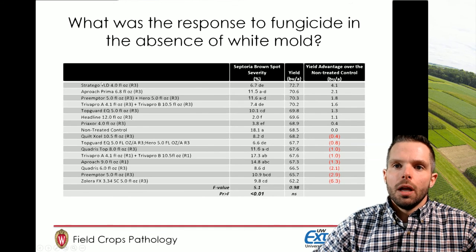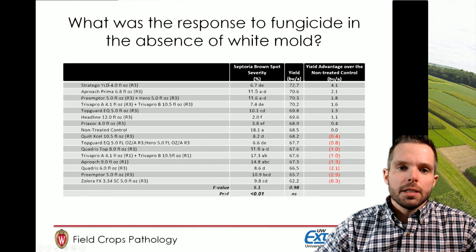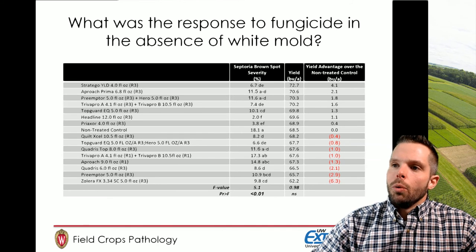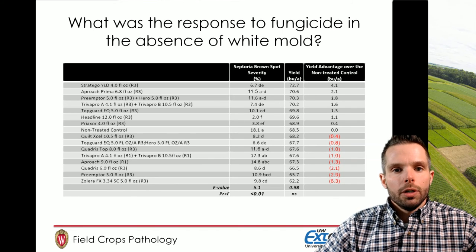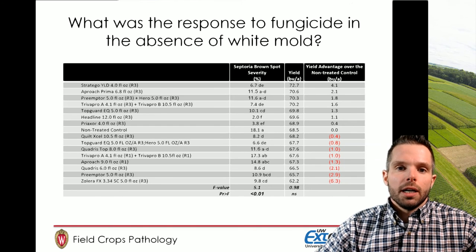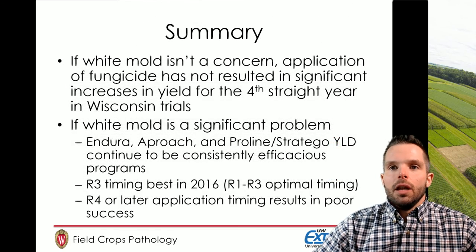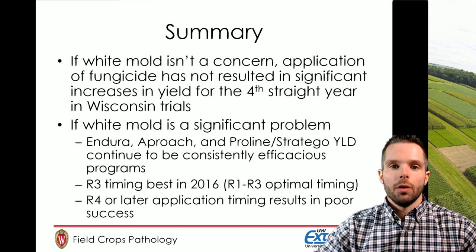Looking at severity ratings from a trial conducted at the Arlington Ag Research Station in 2016, sorted from highest to lowest yield with yield advantage over non-treated in the right-hand column, we did get some advantage over not treating, but the averages were around 2 bushels per acre over the non-treated. This is pretty consistent year in and year out, but that's going to be under what we would need to recover our investment — we really need something more like 4 bushels, which we see from Stratego Yield at the 4 fluid ounce R3 application timing. However, that treatment is not necessarily consistent year in and year out. Usually in Wisconsin in most years you're not going to need a foliar fungicide treatment on soybeans for foliar disease control — you're primarily going to need fungicide targeted at white mold in fields with white mold risk.